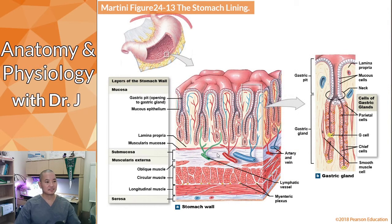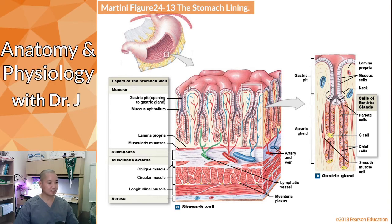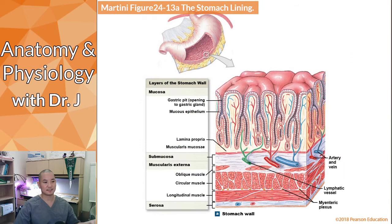The stomach has folds called rugae — rugae is a general anatomical term referring to folds or bumpy linings on a surface. The stomach wall is not completely smooth; it has substructures called gastric pits located in between the folds of the rugae. These pits contain a variety of different cell types, which we will now cover.